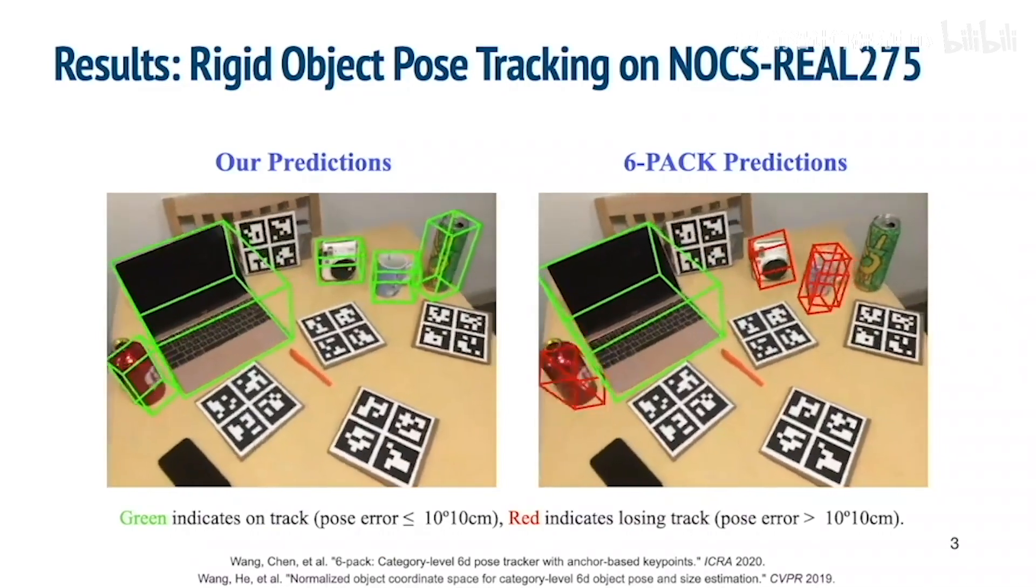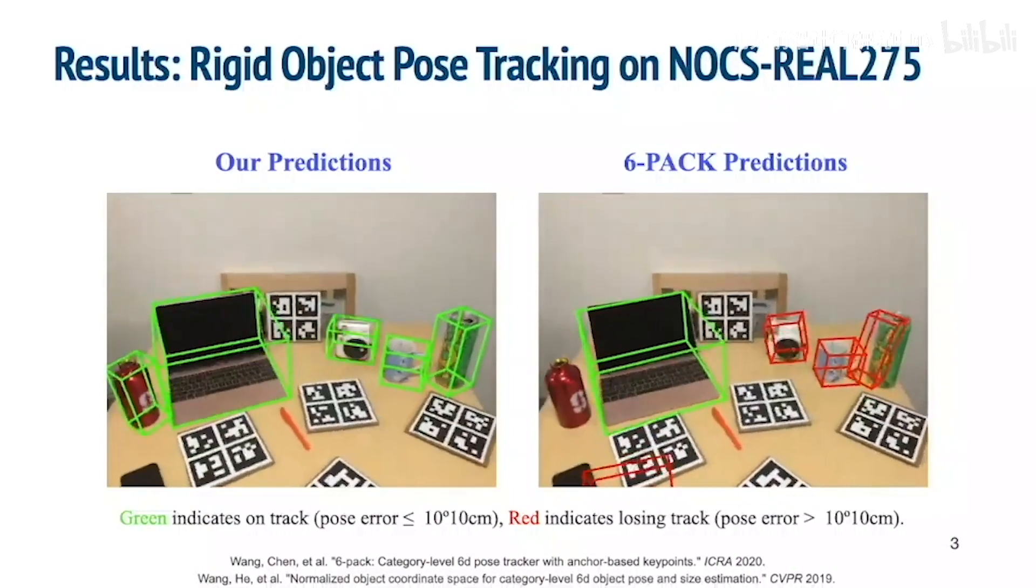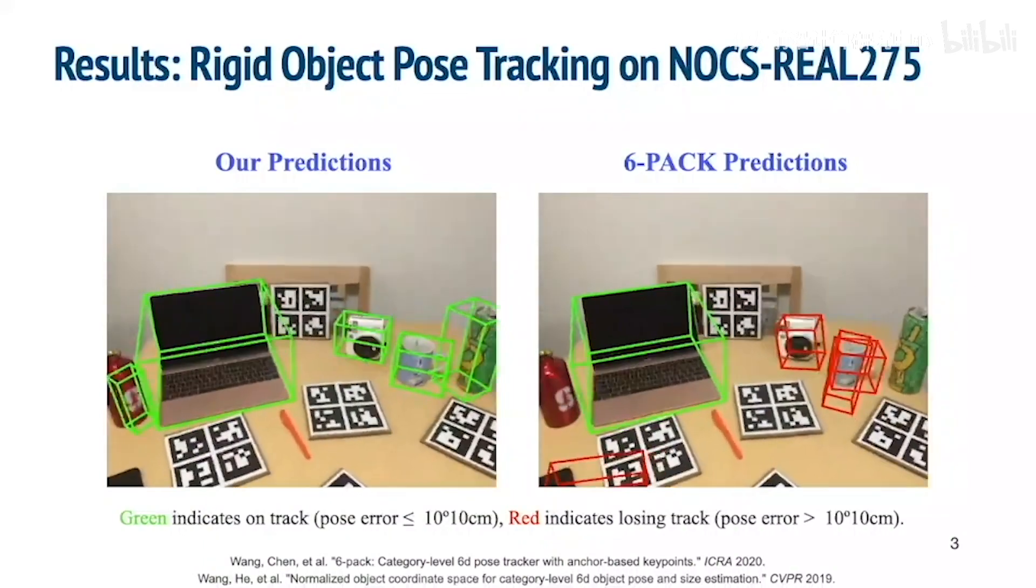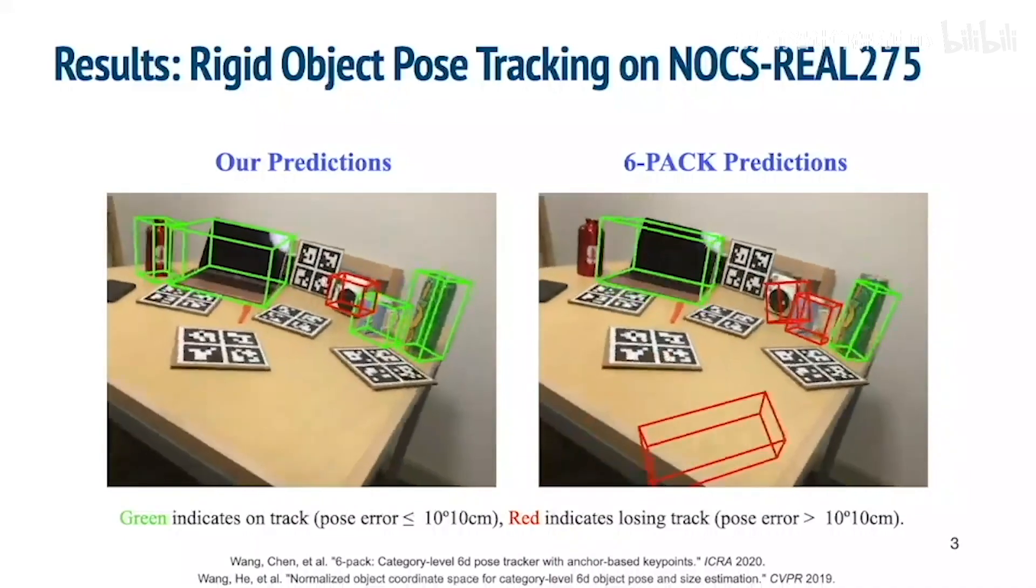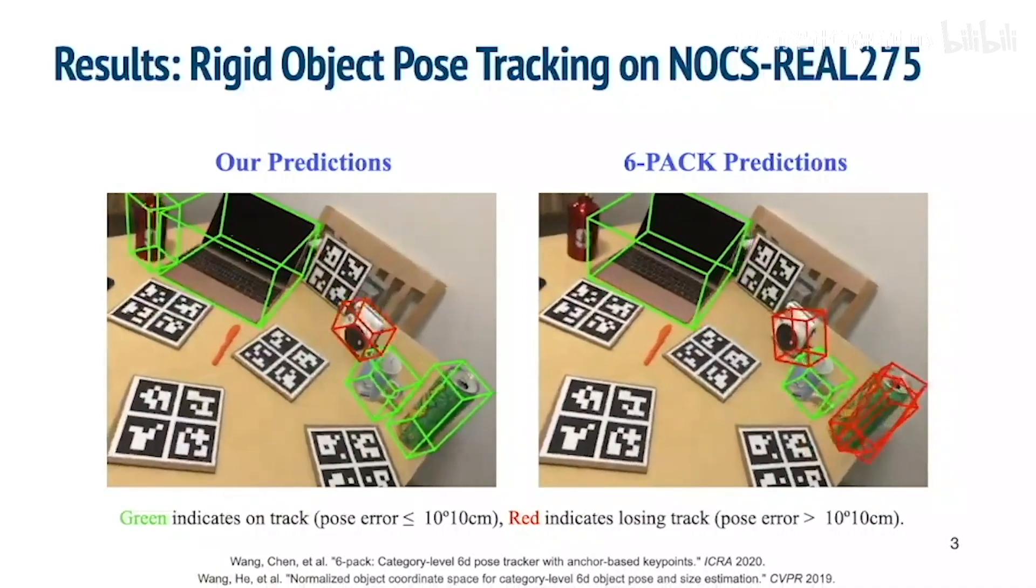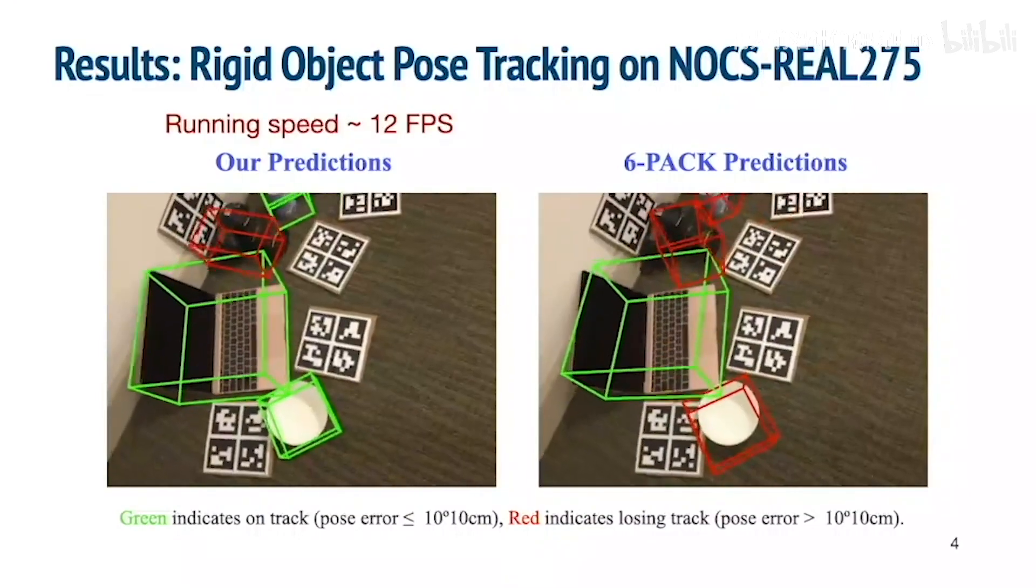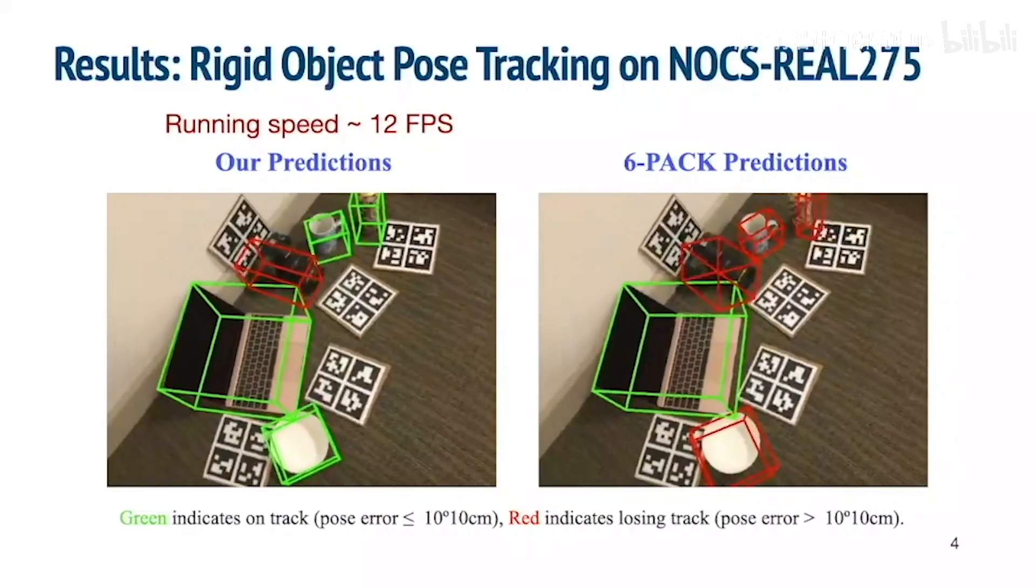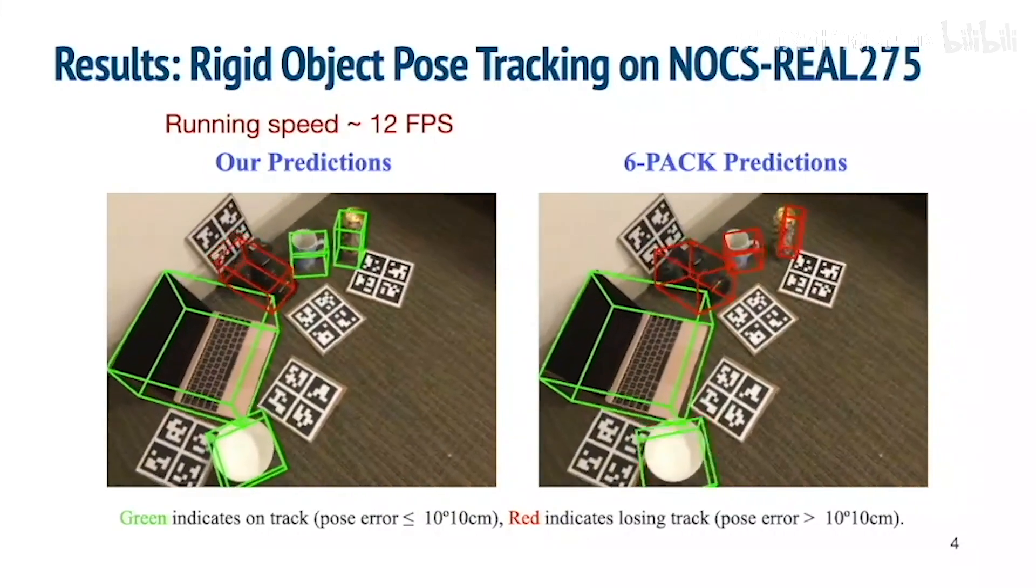Let's start by looking at some qualitative results. Here we show comparisons between our method and the state-of-the-art category-level rigid object pose tracking method, 6-pack. Red bounding boxes indicate losing track, and green ones indicate on track. Our method loses track less often and gives more accurate pose predictions. We also achieve a running speed of 12 frames per second, way faster than 6-pack, which runs at 3.5 frames per second.